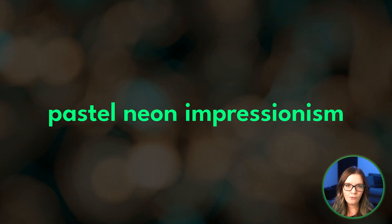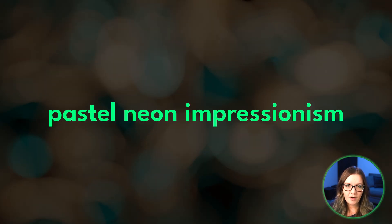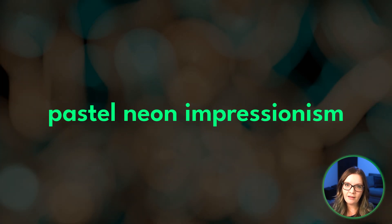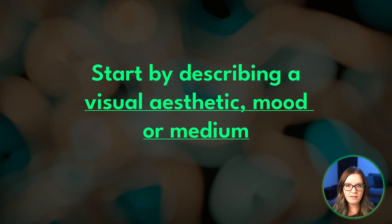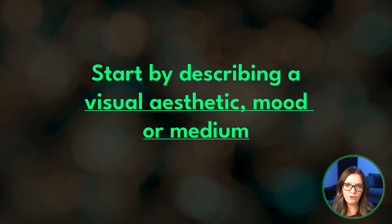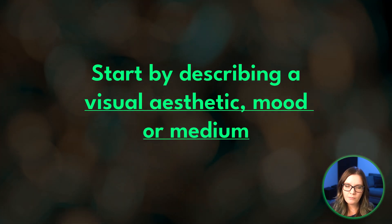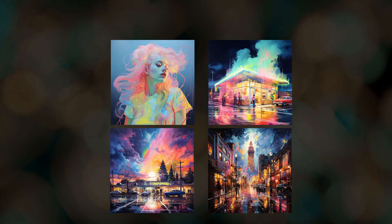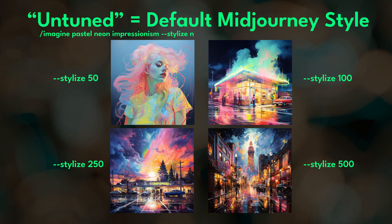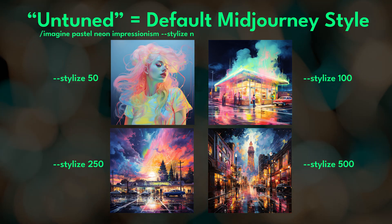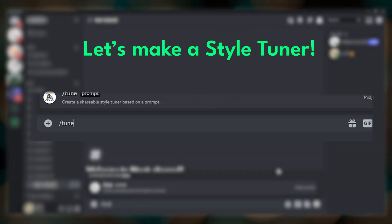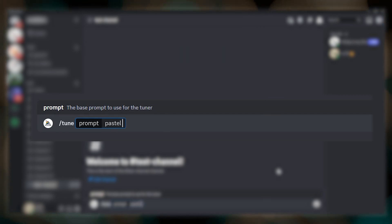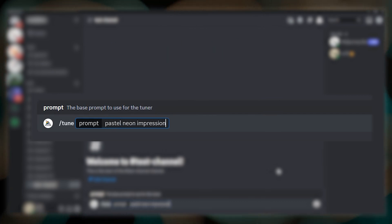Let's get started. We are going to create a style code for Pastel Neon Impressionism. I wanted to start with an aesthetic that I felt could be usable across diverse subject matter with some noticeable consistency. Here's what Pastel Neon Impressionism looks like with the default Midjourney style at a few different stylized values. To kickstart the Style Tuner we'll use the command slash tune, then put in our text prompt and press enter.